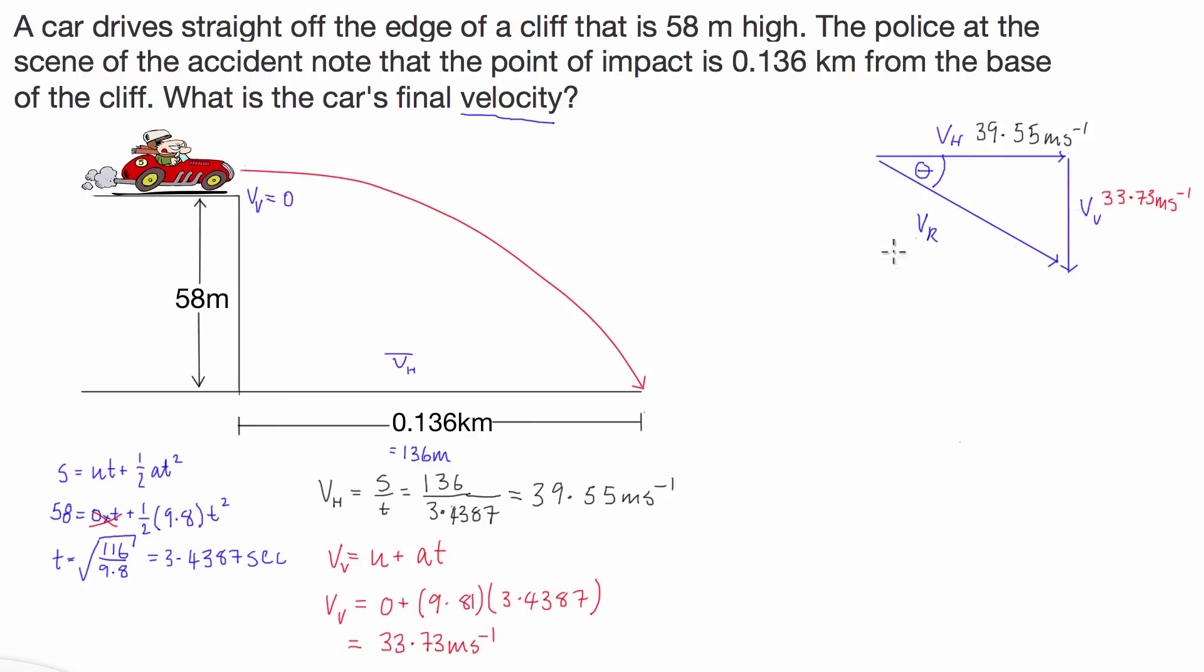Okay, now we've got all of the component vectors for our final velocity vector. So we can now just focus exclusively on the vector triangle over here. The resultant velocity here we can just use Pythagoras with these two sides because this is a right angle triangle. We can say the resultant velocity is equal to the square root of 39.55 squared plus 33.73 squared, and that is going to give us 51.98 meters per second.